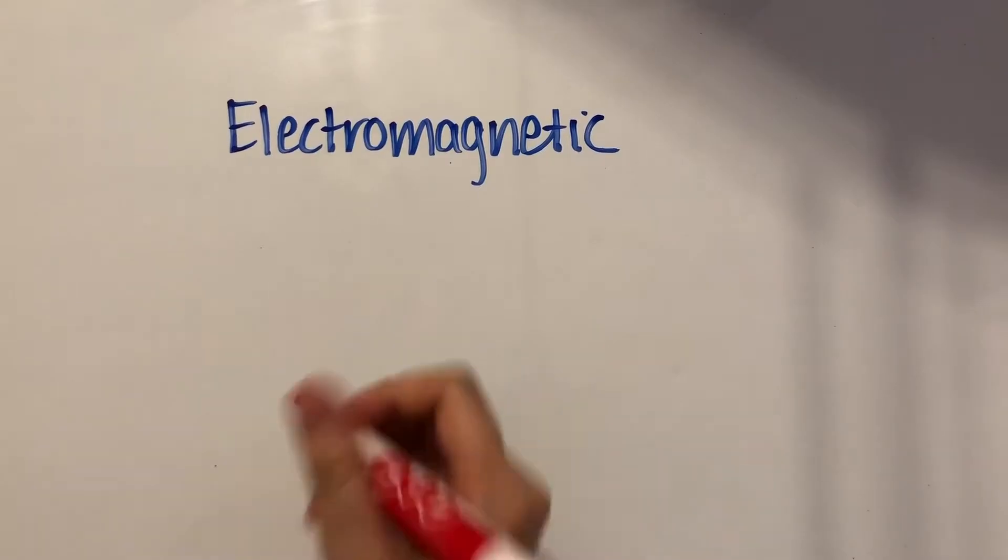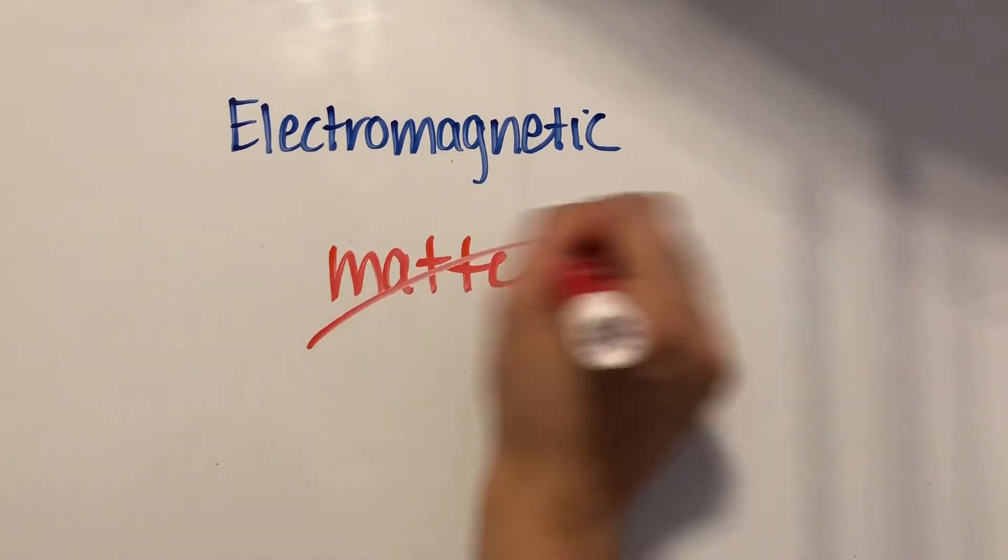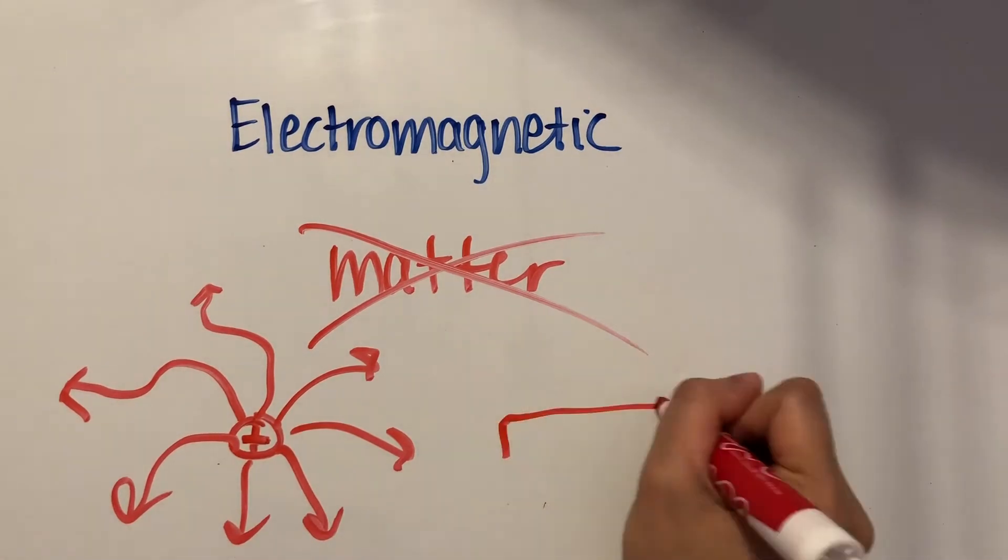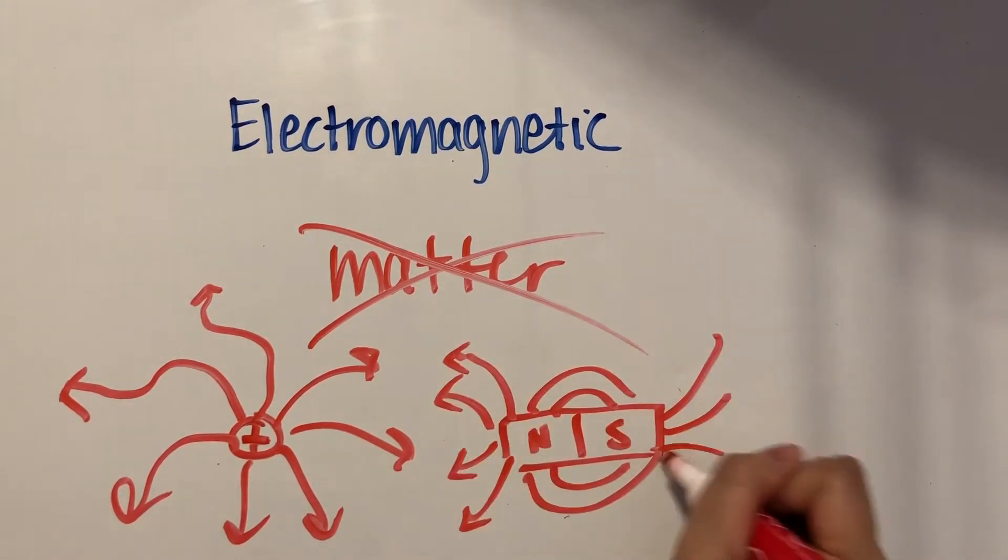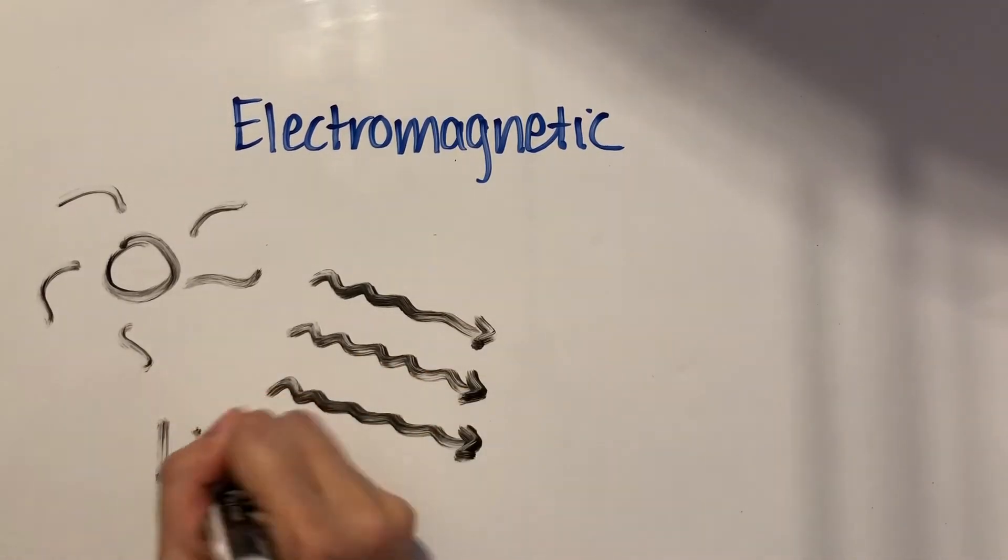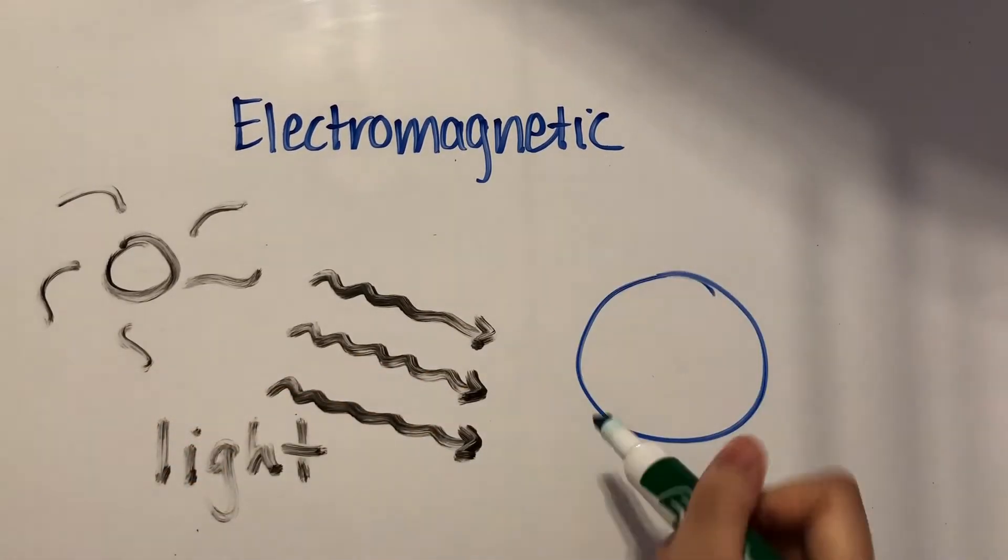In contrast, electromagnetic waves don't move through matter, they move through a vacuum or empty space. They come in the form of oscillations in electric and magnetic fields. Light waves are common examples of electromagnetic waves because they move through space from the sun to the earth.